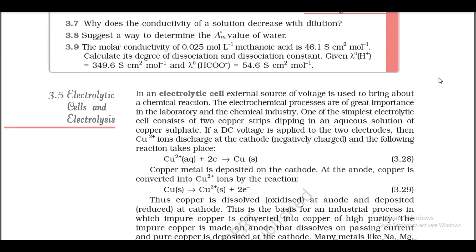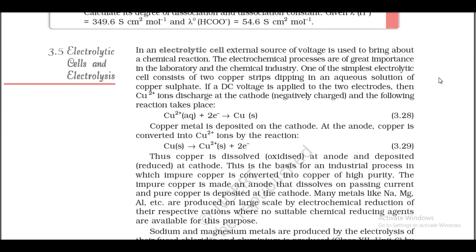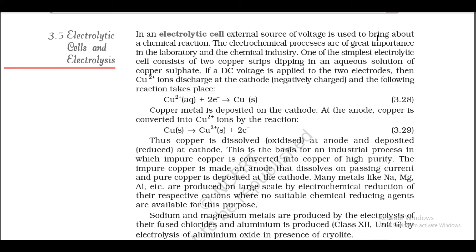Section 3.5: Electrolytic cells and electrolysis. In an electrolytic cell, an external source of voltage is used to bring about a chemical reaction. One of the simplest electrolytic cells consists of two copper strips dipping in aqueous copper sulphate solution. If a DC voltage is applied, Cu²⁺ ions discharge at the cathode (Cu²⁺ + 2e⁻ → Cu) and copper metal is deposited. At the anode, copper is converted into Cu²⁺ ions (Cu → Cu²⁺ + 2e⁻). This is the basis for an industrial process in which impure copper is purified — impure copper is the anode and pure copper is deposited at the cathode.